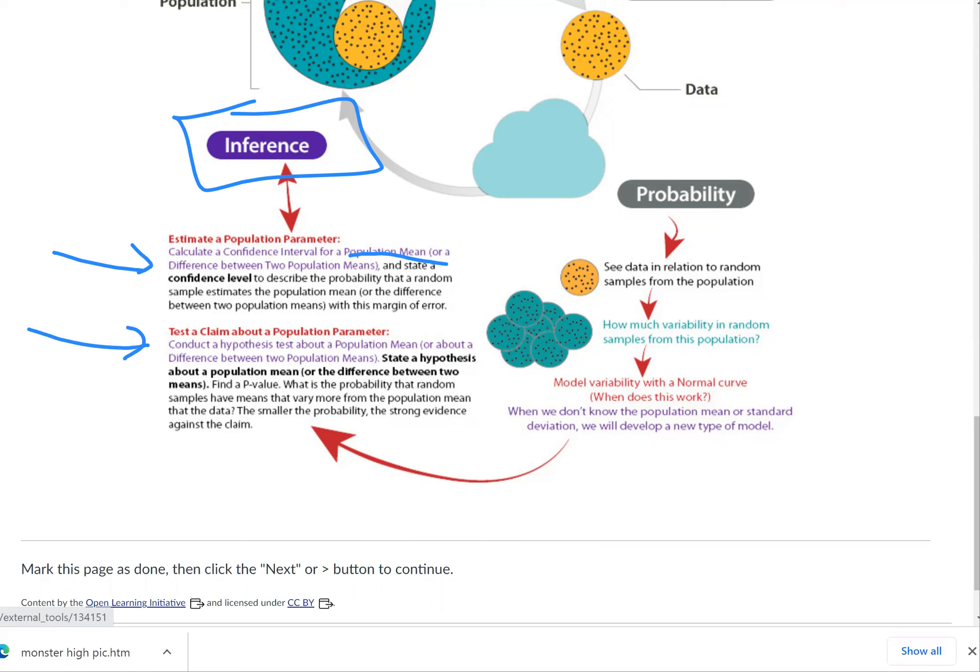Also, we'll test a claim about a population parameter. Specifically, we'll conduct a hypothesis test about a population mean or about a difference between two population means. Also, we'll model variability with a normal curve, just like we've done before.